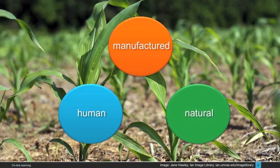Often, various forms of capital are combined to produce a good or service. Farming combines natural capital — soil — with manufactured capital — farm equipment — and human capital — farmer experience and know-how — to produce crops.